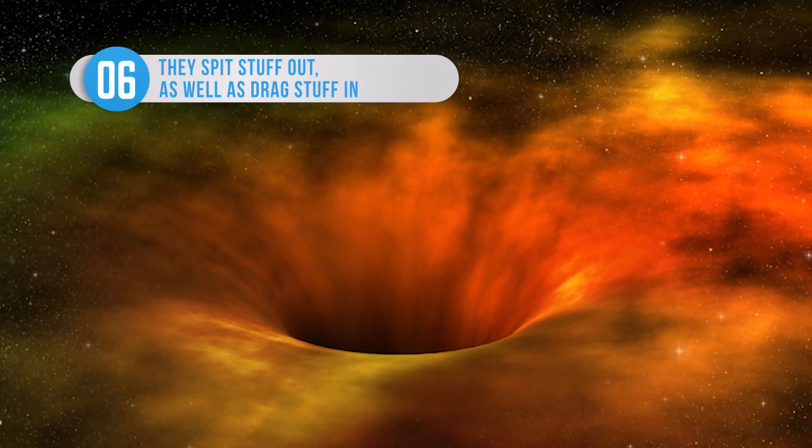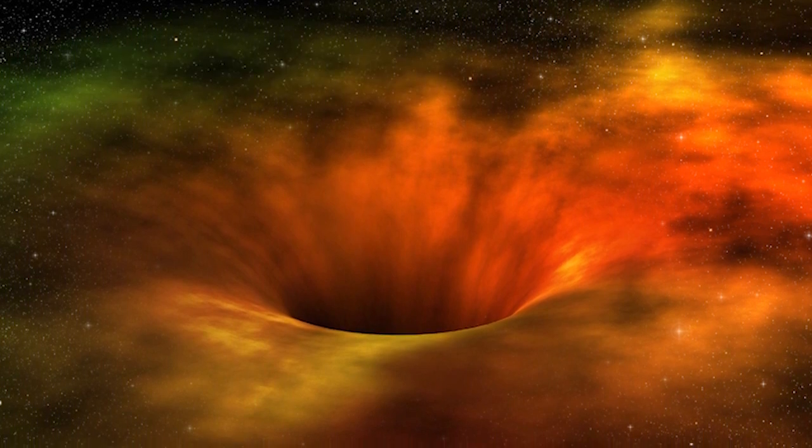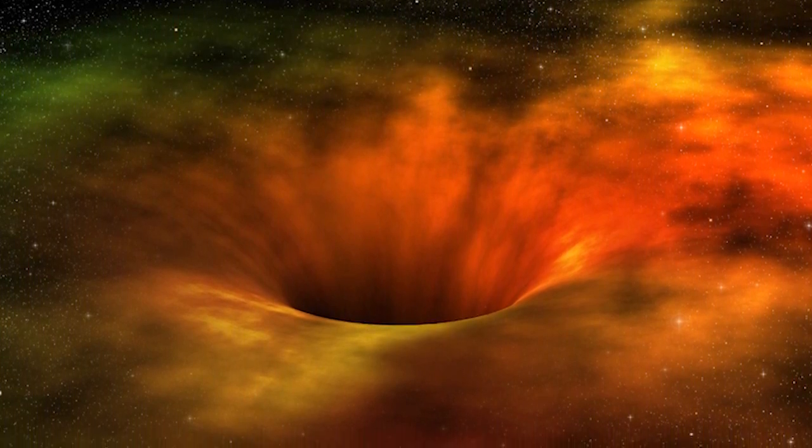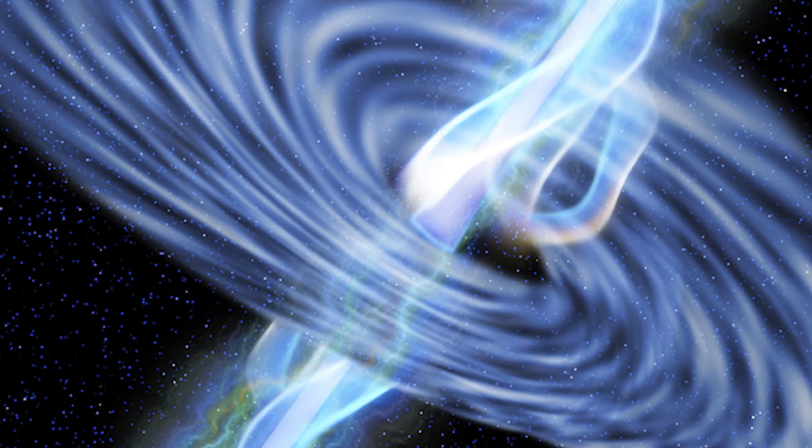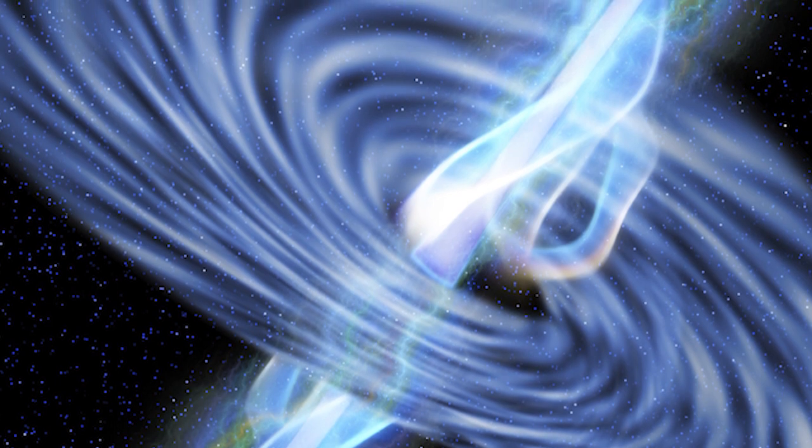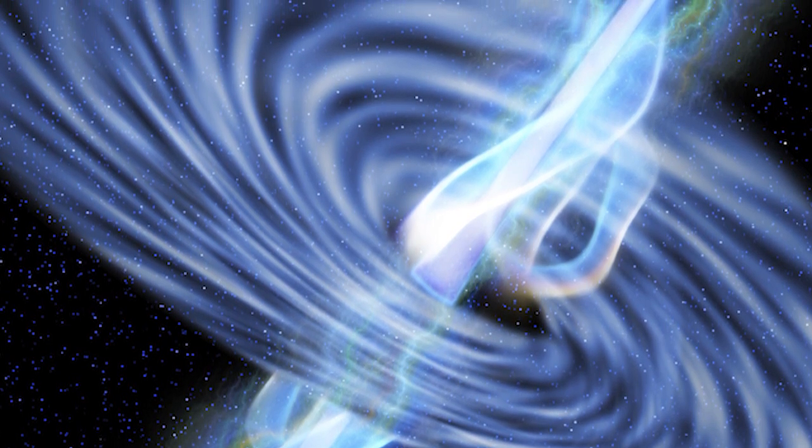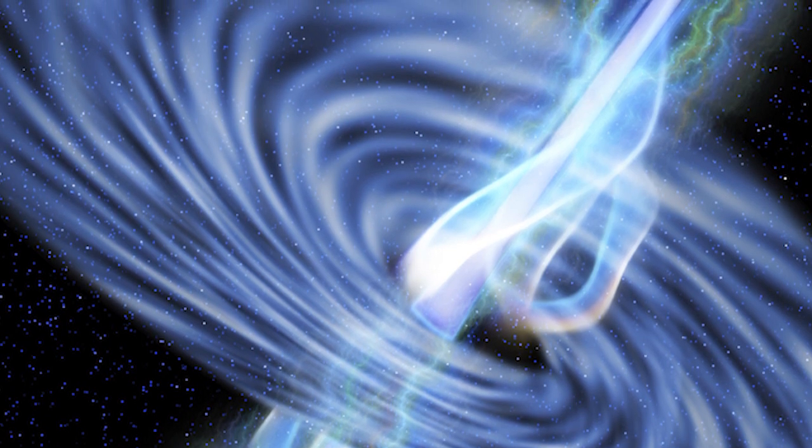Not only do black holes suck up everything that gets near them, they also eject matter. When all of the vacuumed up mass gets crushed together so hard that space between the individual components of the atoms is compressed, it is broken down into subatomic particles that can stream away. These particles are released in jets which propel out of the black hole due to intense magnetic field lines that can cross the event horizon.